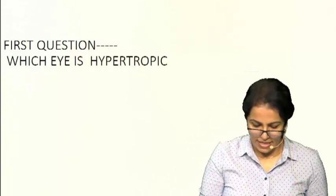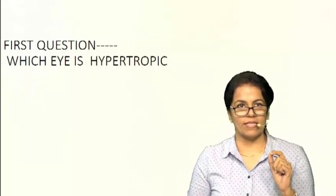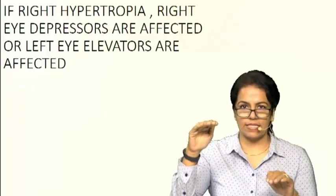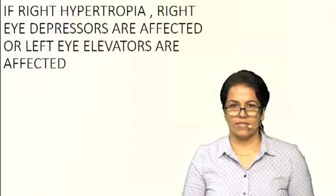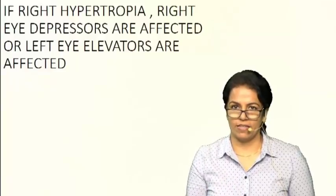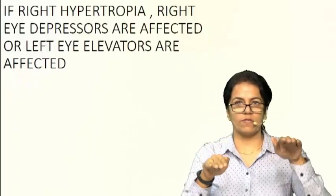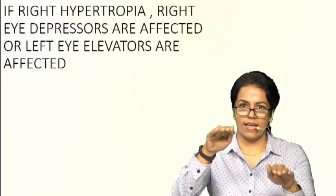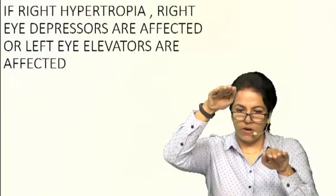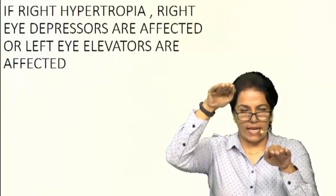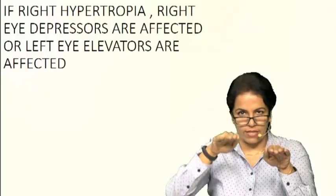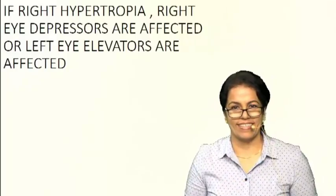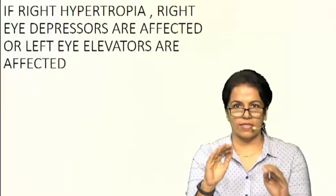If there is a right hypertropia, the right eye depressors in question are the right inferior rectus and right superior oblique. The left eye elevators in question are the left superior rectus and left inferior oblique. So the four muscles which can be affected are: right superior oblique, right inferior rectus, left superior rectus, or left inferior oblique. Once we are clear on these four muscles, we move to the second question.